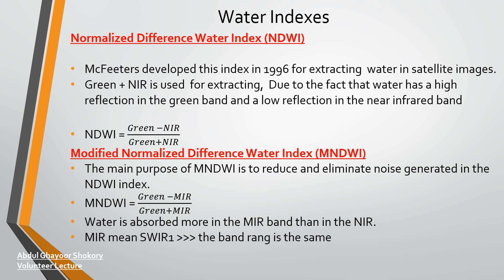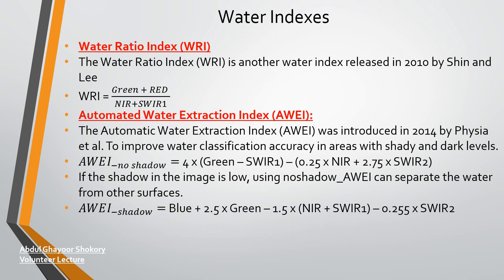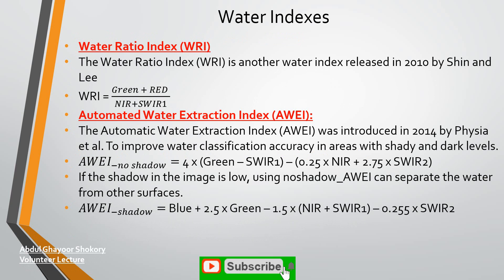The third index is WRI — the Water Ratio Index. This index was developed by Shen in 2010. The formula is: green plus red divided by NIR plus short-wave infrared one.